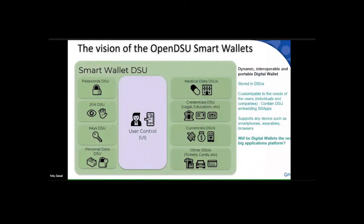Our vision is what we call an OpenDSU Smart Wallet. Any time you do something on a blockchain, you need a wallet — a piece of application handling your keys and data. With smart wallets, we could create applications — SS apps — for things like medical data, credentials, currencies, tickets, and cards. Instead of having a proprietary wallet for each, you could have one wallet where they all communicate, exchange data, and remain under your control. If someone develops a new SS app, you can just load it in — it would look like a browser but function like a wallet.